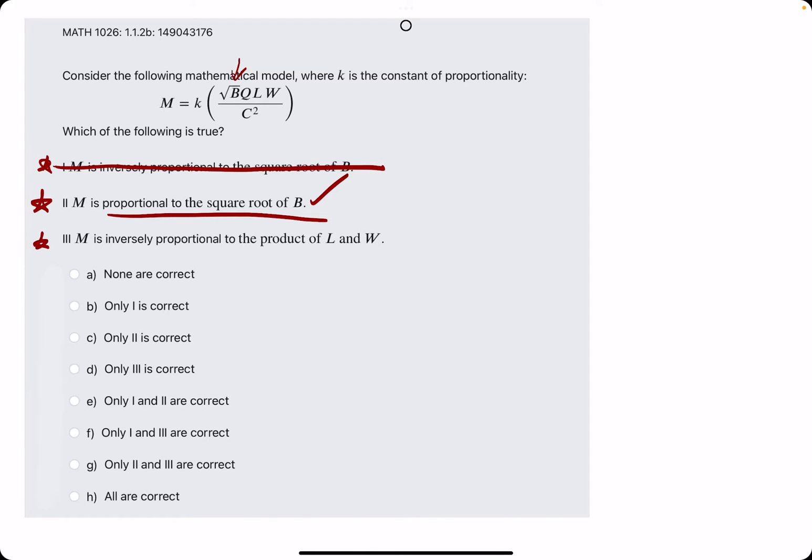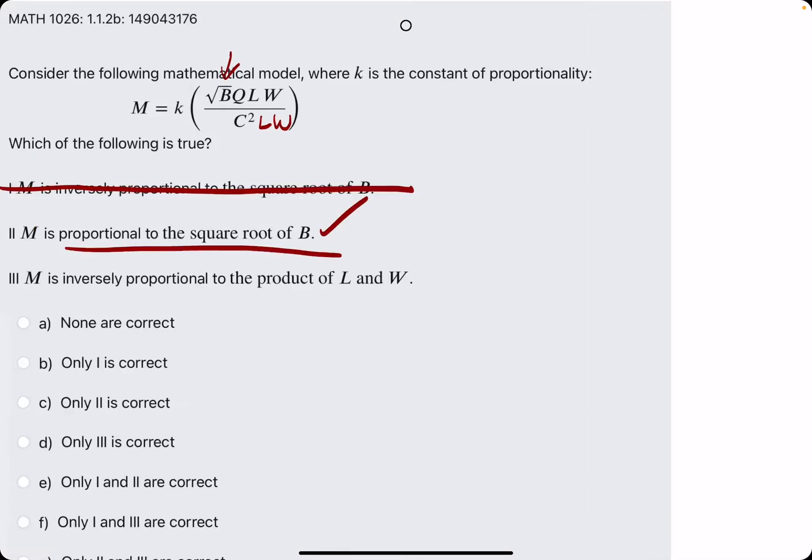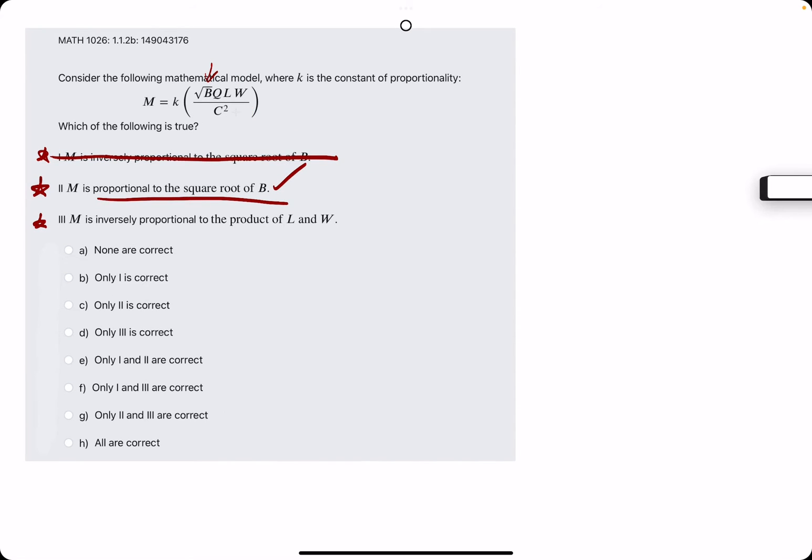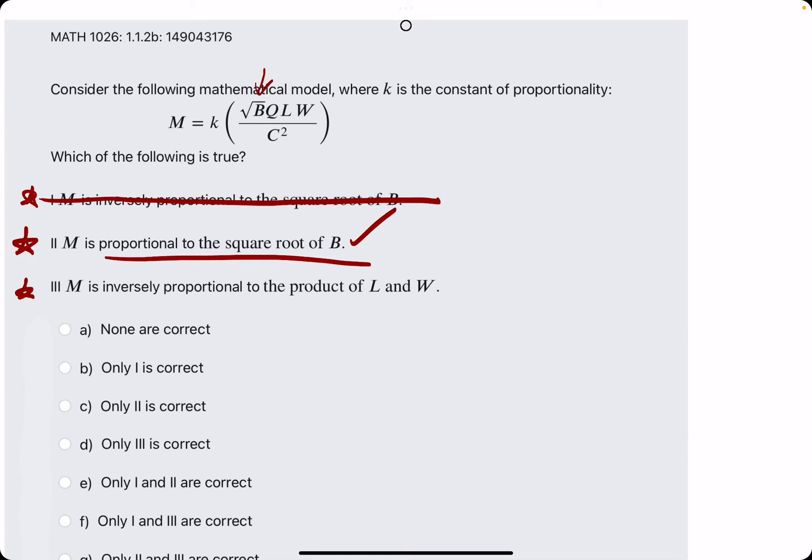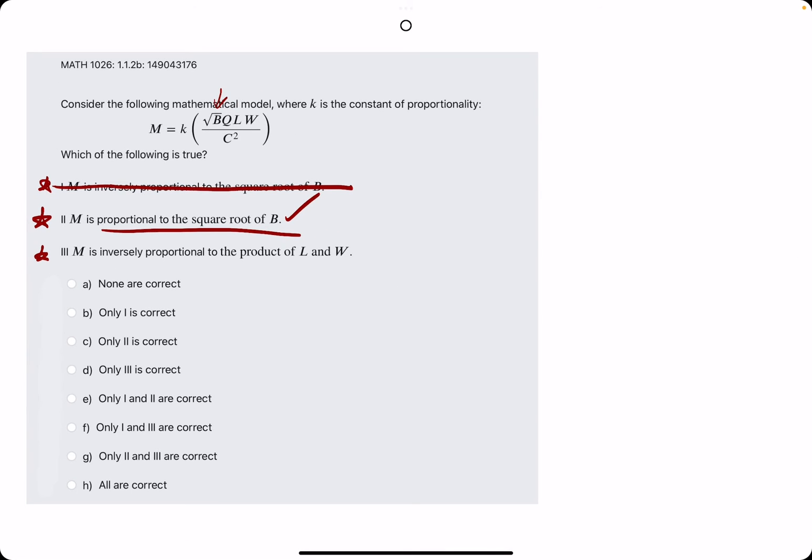Number three, M is inversely proportional to the product of L and W. That means L and W should be in the denominator here, but they are not. They are in the numerator, which means that M is proportional to that product, but not inversely proportional. So it looks like just 2 is correct.